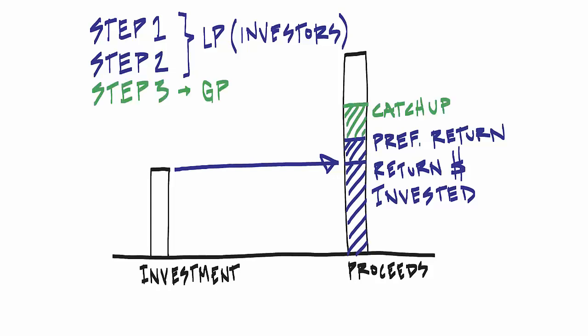Next, under step three, we have the catch-up. This is paid to the general partnership, and is generally equivalent to 20% of the cash inflows from step two and three, or the cash inflows from step one, two, and three. And we'll explore both of those in videos associated with those templates.